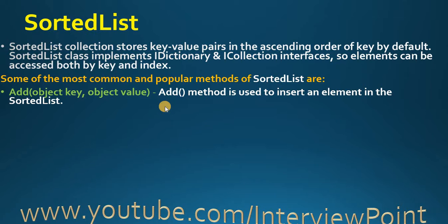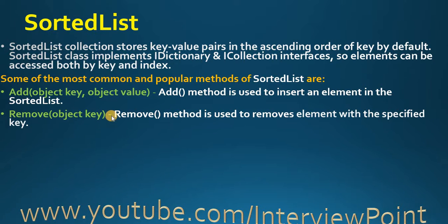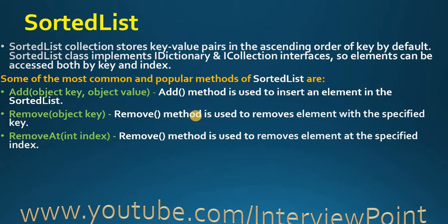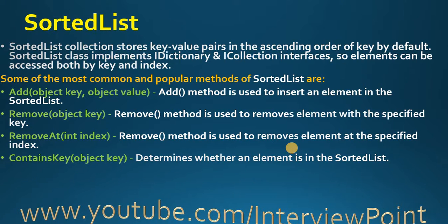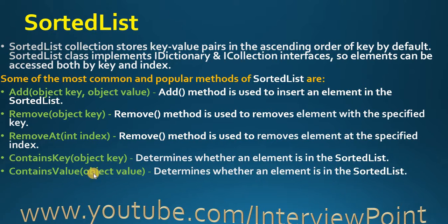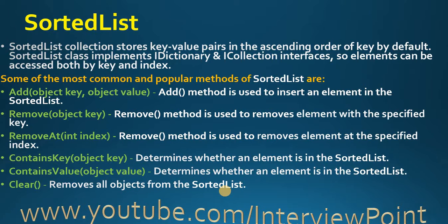Some popular methods are available here. I am going to discuss all the methods in C# Flexi Sorted List. The Add method — it is also available in ArrayList — is used to insert an element into the Sorted List. Remove and RemoveKey take an object key. The Remove method is used to remove an element with a specified key. RemoveAt asks for an index position — pass the index position — and is used to remove an element at a specified index. ContainsKey takes an object key and determines whether an element is in the Sorted List or not. ContainsValue takes an object value and determines whether an element is in the Sorted List. The Clear method is also available. All these methods are the same as available in other collections.